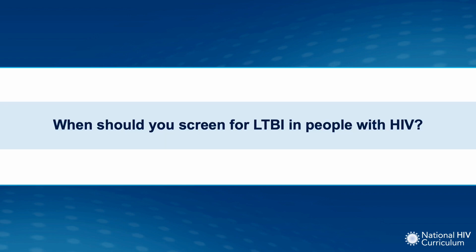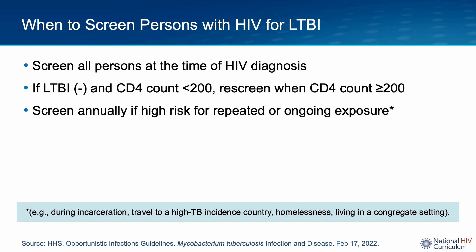So when should you screen for LTBI in people living with HIV? According to the opportunistic infection guidelines, patients should be screened for latent TB infection at the time of their HIV diagnosis and/or entry into care. HIV is a risk factor for progression of LTBI to active tuberculosis and is associated with poor outcomes should an individual develop active TB. There are now safe and effective treatments for LTBI, so all people with HIV should be routinely screened.